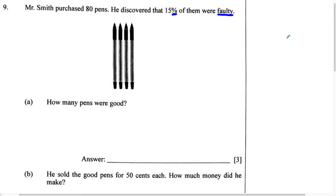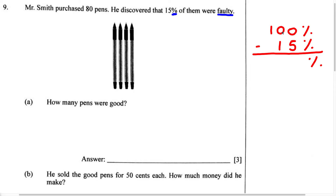Now let's set this up. We have 100% minus 15%. We're just going to bring down the percent symbol. We know 0 minus 5 can't go because 0 is smaller, so we're going to have to borrow. We can't borrow from the 10s unit, so we borrow from the 100s unit. 1 becomes 0, 10 becomes 9, and 0 becomes 10. So 10 minus 5 is 5, and 9 minus 1 is 8. Therefore, 85% of the pens are good.